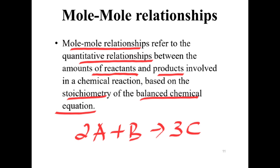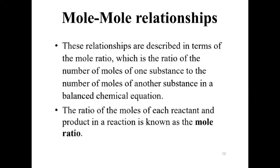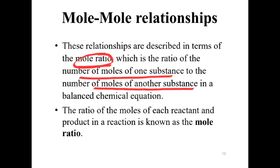A balanced chemical equation tells us that one mole of A and one mole of B react to produce one mole of C. These relationships are described in terms of mole ratio, which is the ratio of the number of moles of one substance to the number of moles of another substance in a balanced chemical equation.